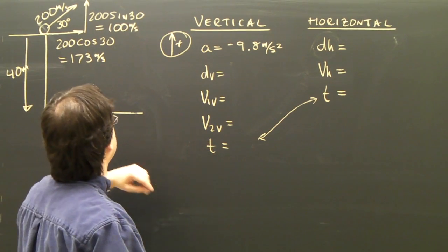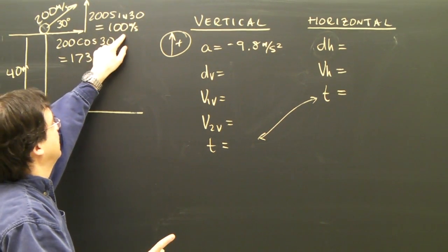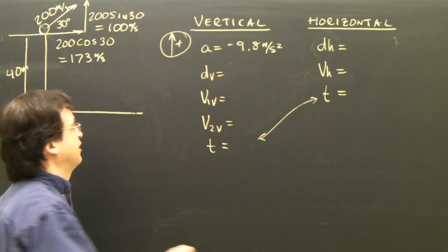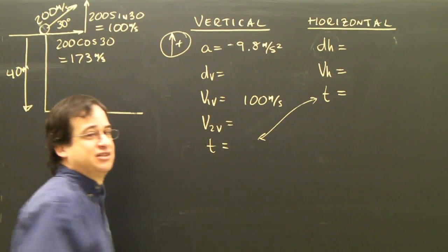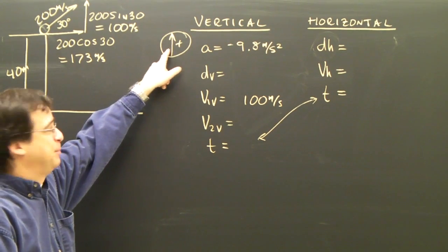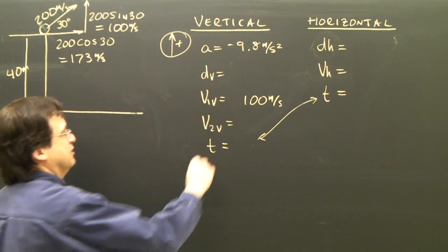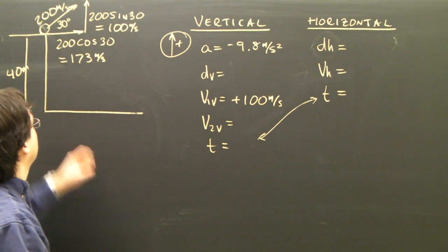Okay, so let's put in our numbers here. I know that the initial vertical velocity, because this is what it's doing at the beginning, is 100 meters per second up. I check with my sign convention. Up is positive. This is up, so it's positive 100 meters per second.